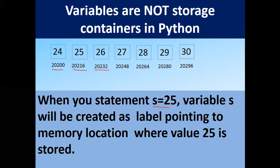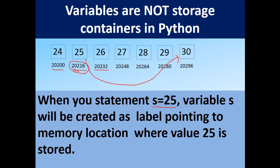For example, if I say S equals to 25, variable S will be created as a label pointing to the memory location where 25 is stored, along with its address. If I change S equals to 30, in Python it will move the label to the new memory location holding 30 — unlike C++ where it overwrites the value at the same location.